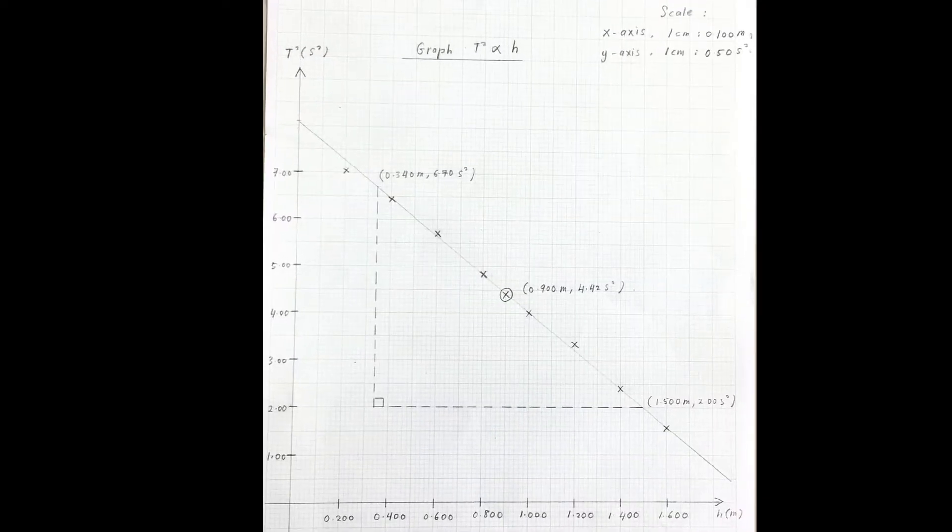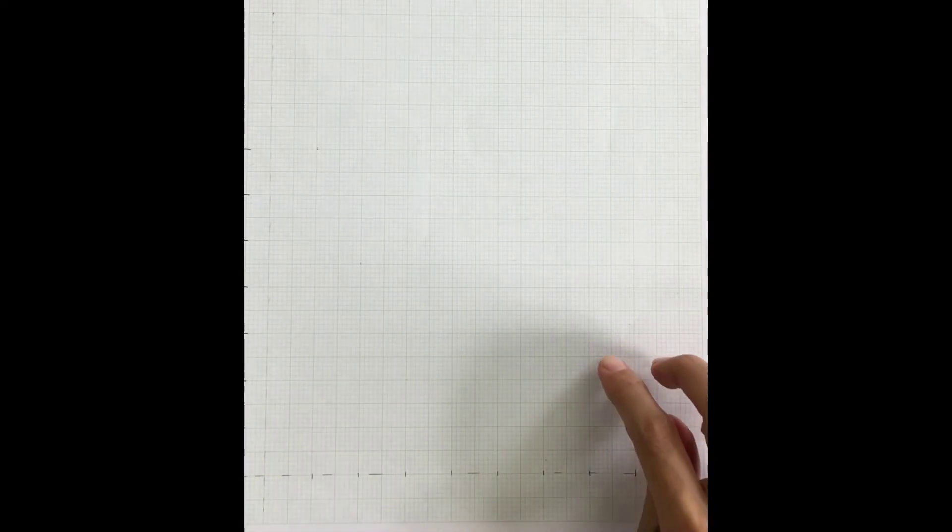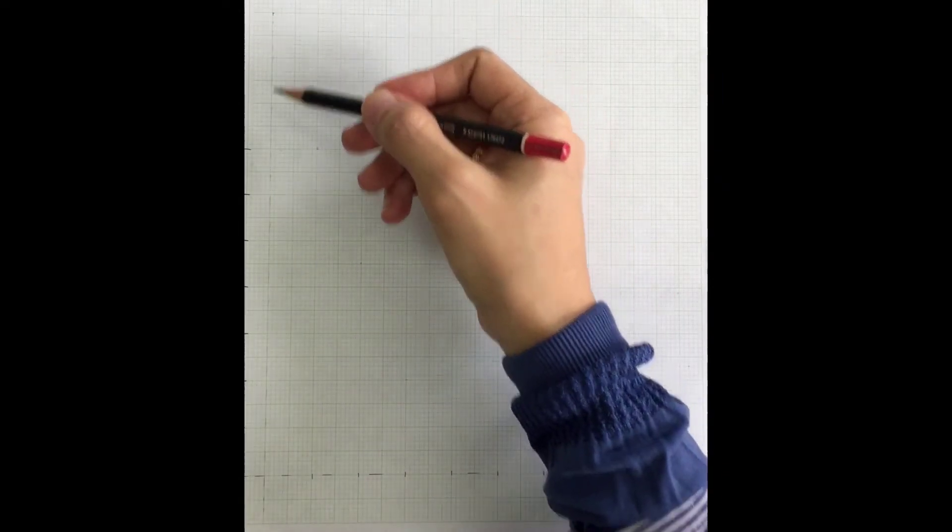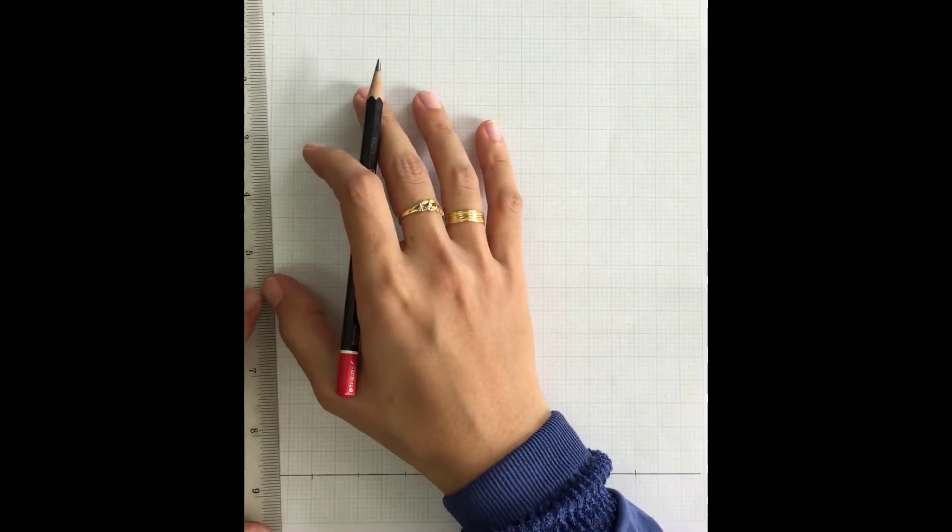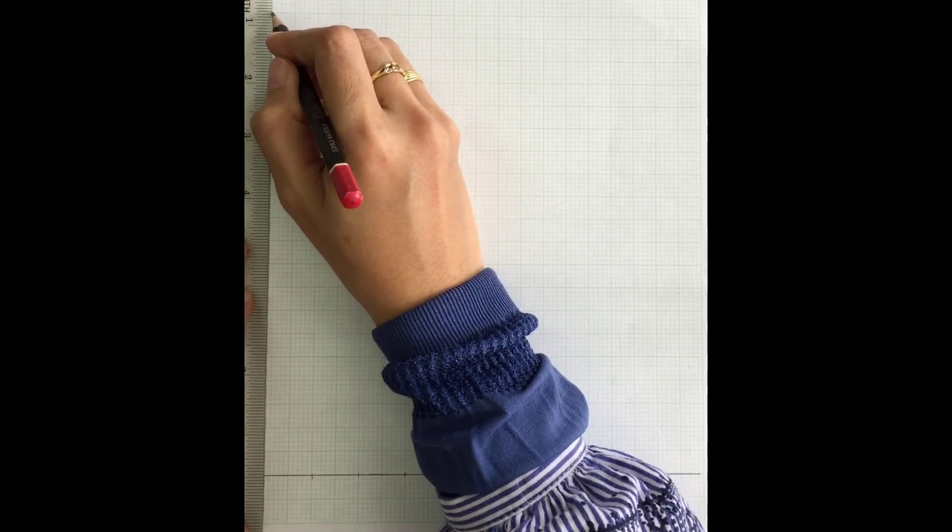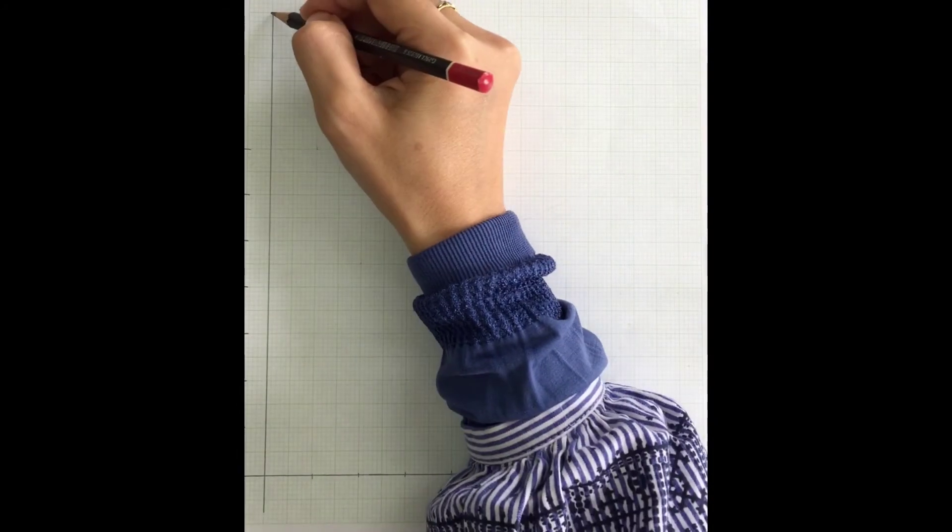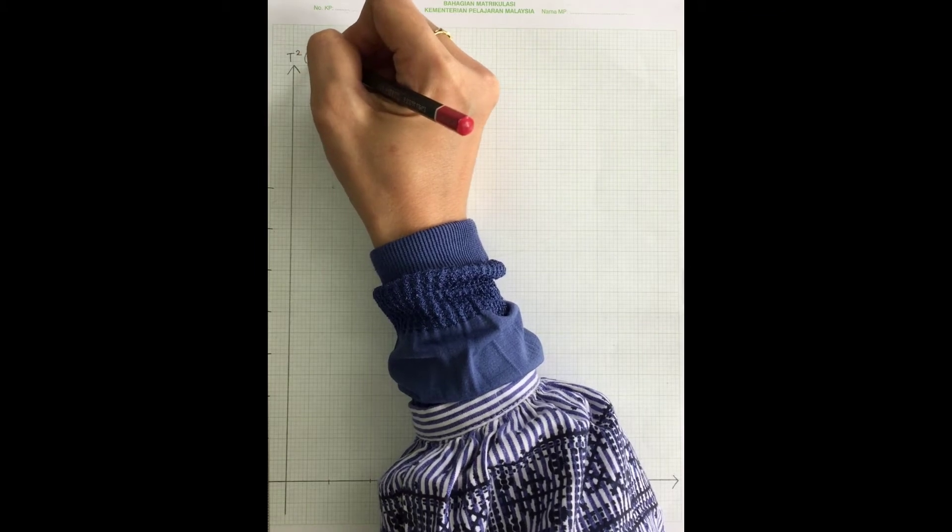So this is the graph. Let's look at the video on how to plot. Now we are going to draw the graph. First, you take a piece of graph paper. First thing first, you have to draw the x-axis and y-axis. After that, you label the y-axis and the x-axis. In this question, the y-axis is T squared and the unit is s squared. For the x-axis, it is h and the unit is meter.